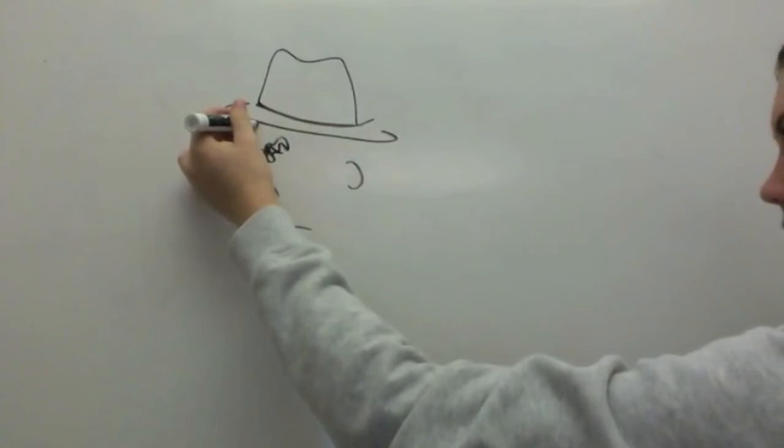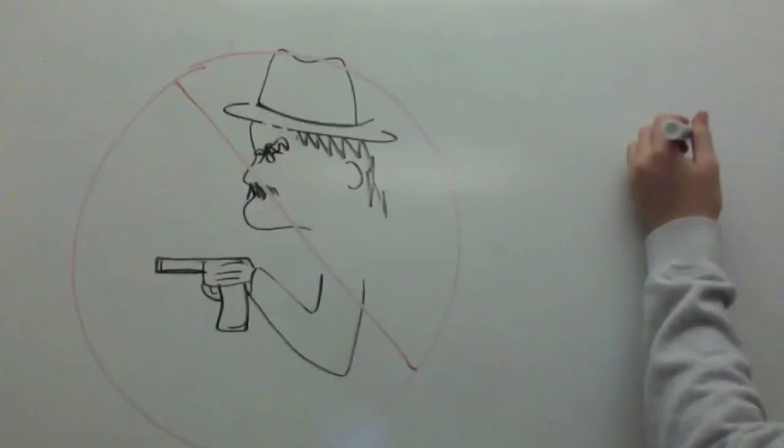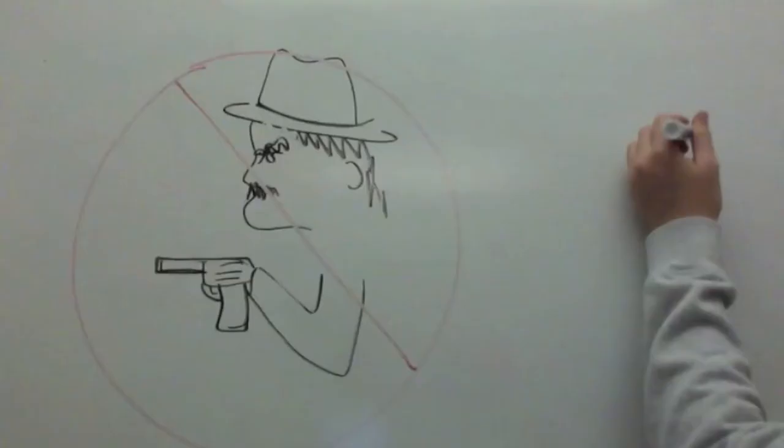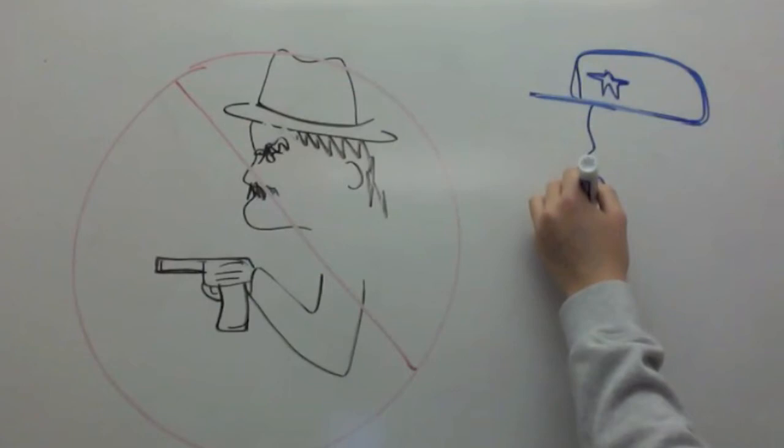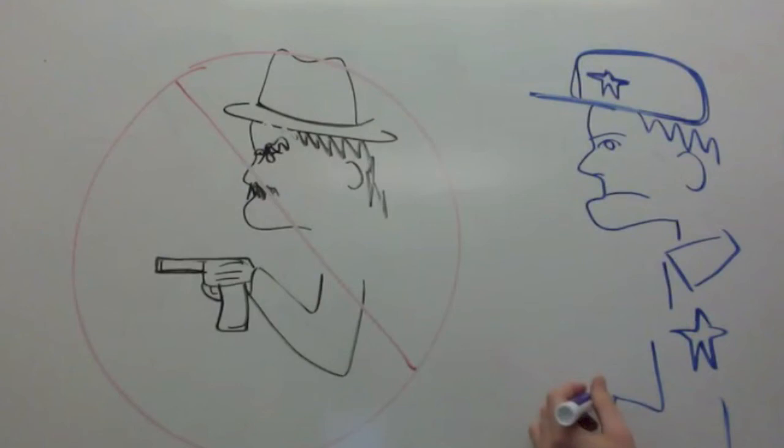Rawls argues in favor of a liberal international order, one that promotes the mutual respect of all liberal and decent states. In Rawls' view, this respect should not be extended to outlaw states. Rawls goes so far to say that intervention with outlaw states is justified in certain circumstances. He admits, however, that this should be avoided if possible.